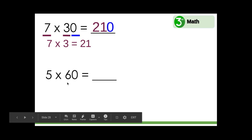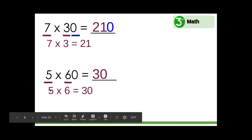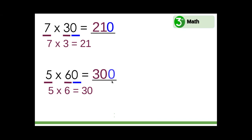What about five times sixty? We can multiply five times six, and five times six equals thirty. But this isn't just five times six ones — this is five times six tens. So we can put a zero to hold the place. Five times sixty equals thirty tens, or three hundred.